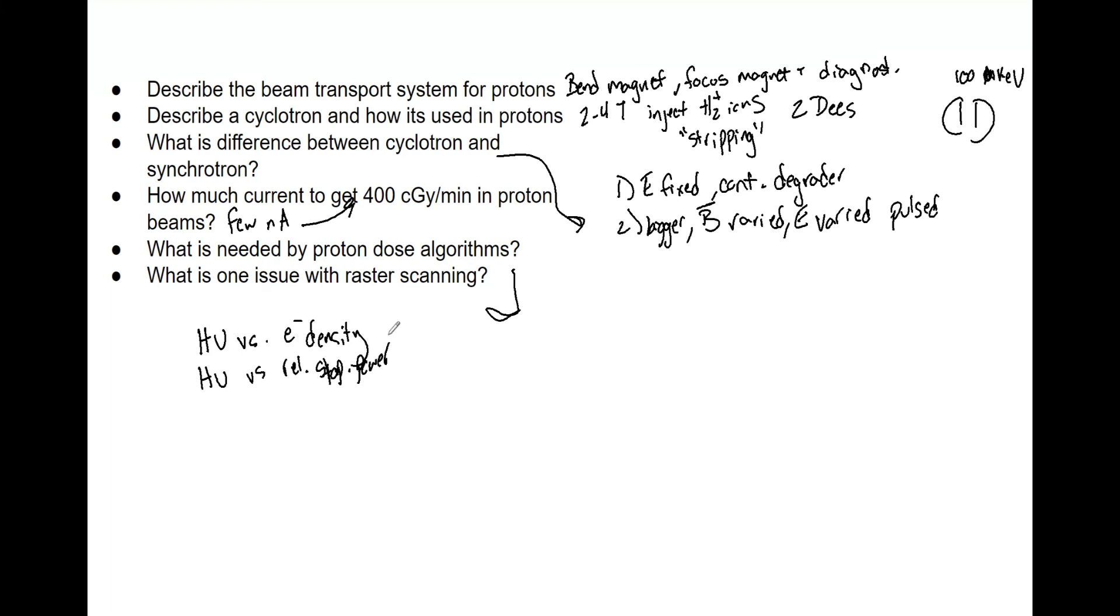What is one issue with raster scanning? Raster scanning leads to very high instantaneous dose rates. Ultimately what that is going to do is potentially lead to a high pion. When we are determining our beam and qualifying energies and doing QA, we don't want those high instantaneous dose rates or a high pion, as we know from our TG-51 and other calibration protocols.